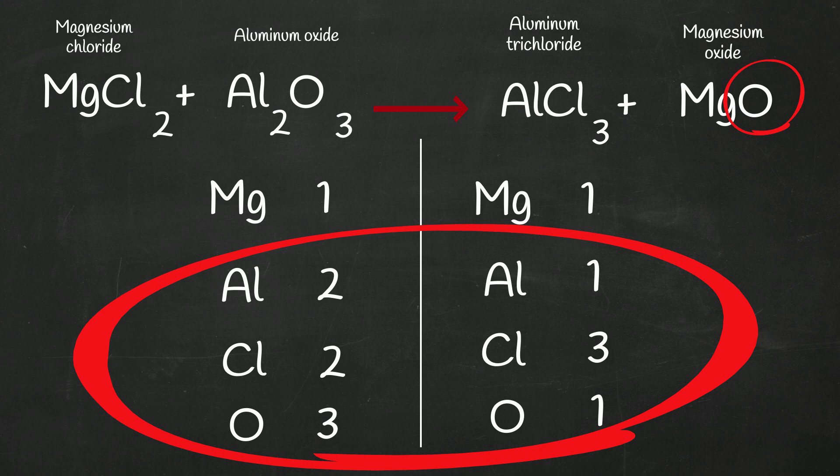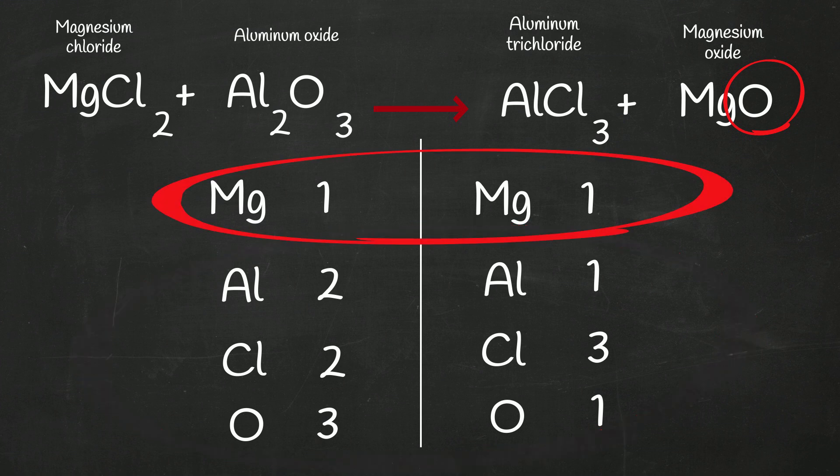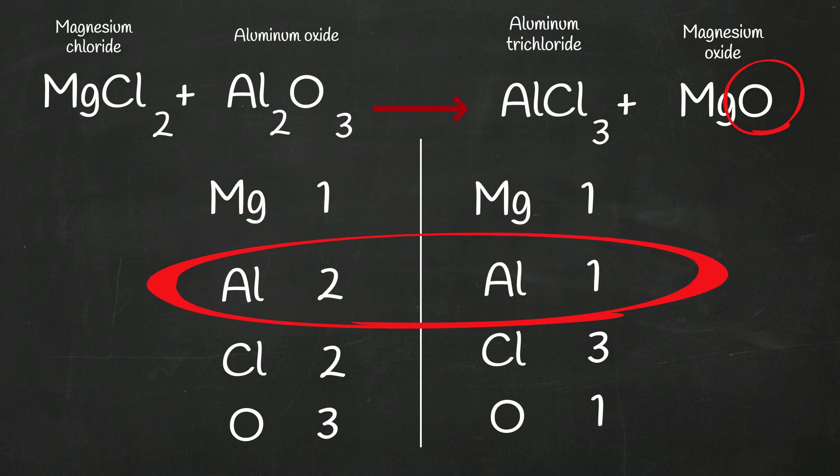So let's start with the metals. Magnesium, so far, so good. We are balanced, one, one. When we get to the aluminum, we have two aluminums on the left and only one on the right. Remember, you cannot change subscripts, but you can add coefficients.